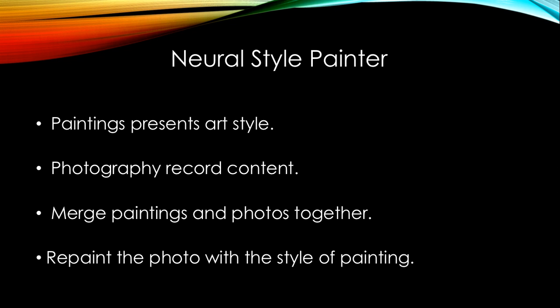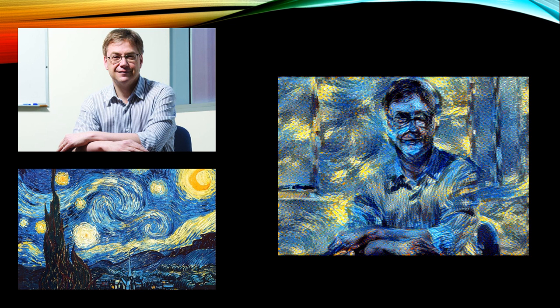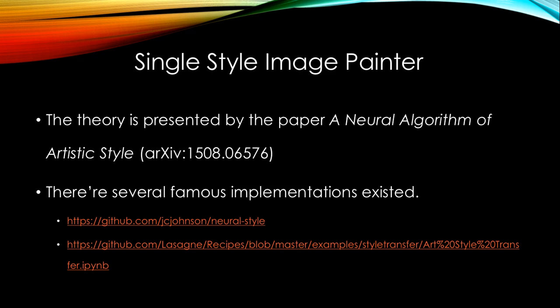Let's see an example. The upper left is a photo of our beloved Professor Ross who teaches our machine learning course. Below it is the famous Starry Night painted by Van Gogh. On the right is what we can achieve using Neural Style Painter. In this example we have a single style image to provide style information, and we already have some very good implementations in Torch and Python.